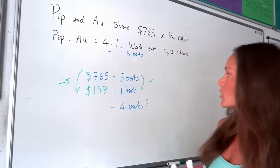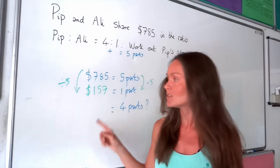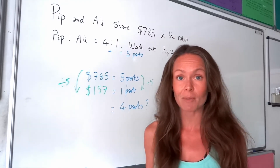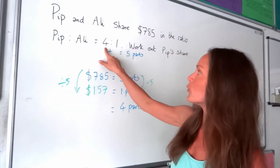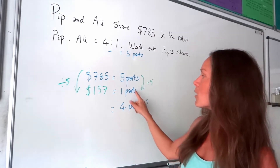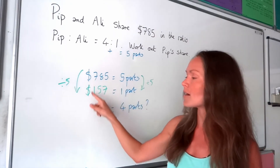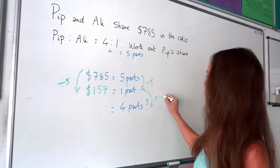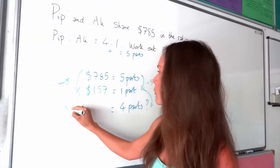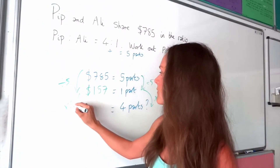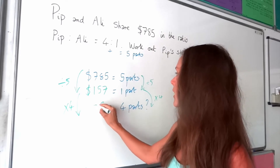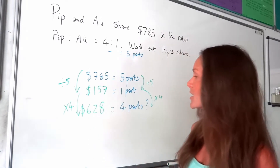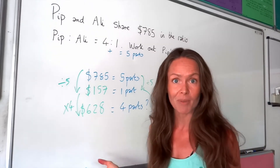Now that we know one part is $157, we can work out Pip's share because Pip is four parts. So we just multiply that answer by four. 157 multiplied by four gives 628. So $628 is the share that Pip gets.